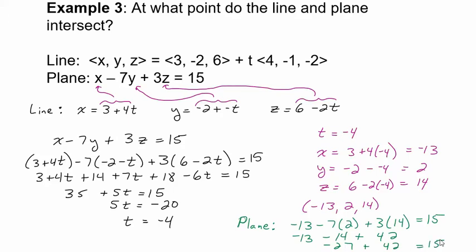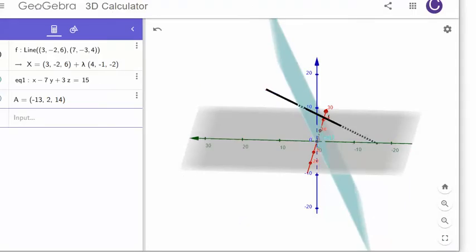Awesome, that's a good check. I'm very confident that the answer is negative 13, positive 2, 14. So one of my favorite things to do is to actually plug that into our graph and see that point.